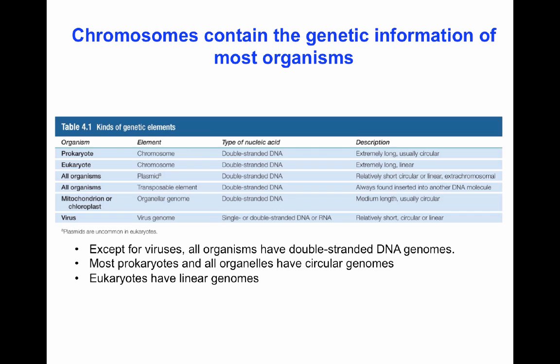The other element I would like to point out are plasmids. Plasmids are very common in prokaryotes, including bacteria and archaea. They're rare in eukaryotes, except in some yeasts that have been described to contain plasmids. They are short and circular, or sometimes linear. They're extra-chromosomal, and they usually have information that is beneficial but not essential for the cell.